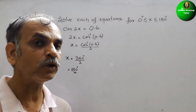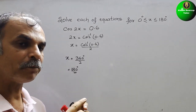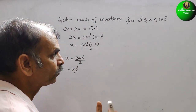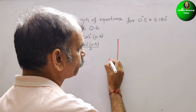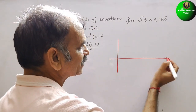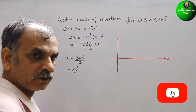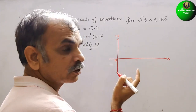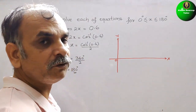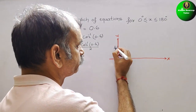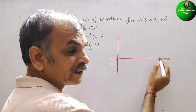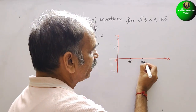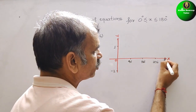That means we have to draw a graph which completes its cycle in 180 degrees. This is your x-axis and this is your y-axis. We will complete our full cycle: in the y-axis we mark the amplitude as 1 and minus 1. In the x-axis we mark 90°, 180°, 270°, and 360°.